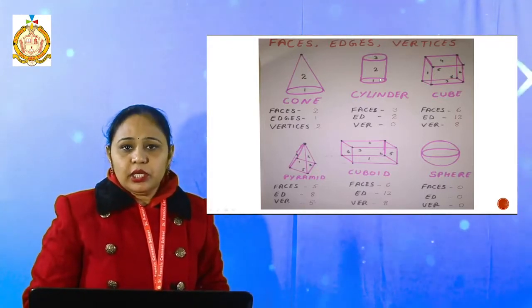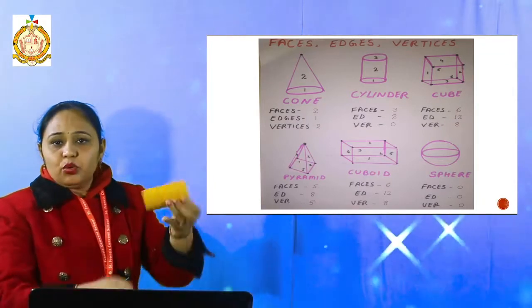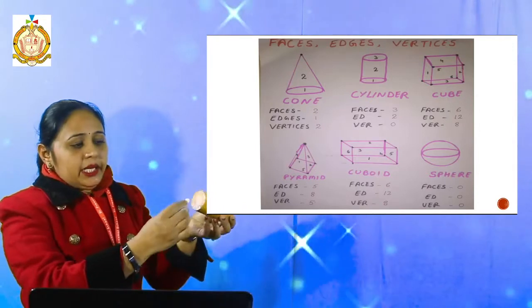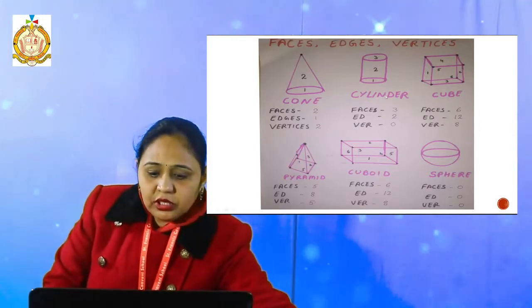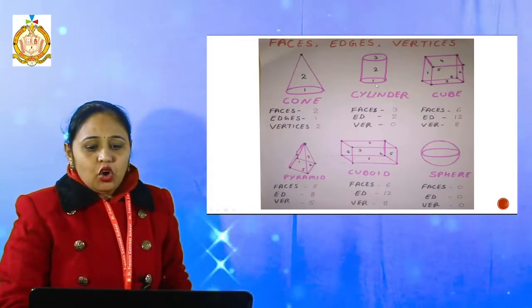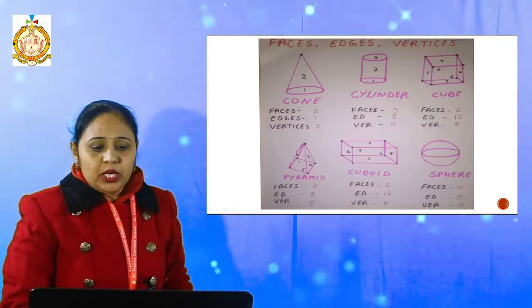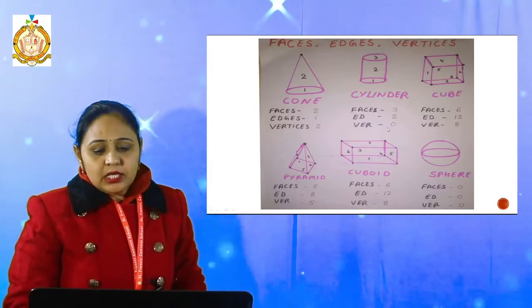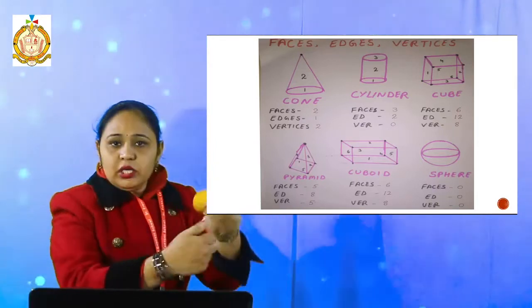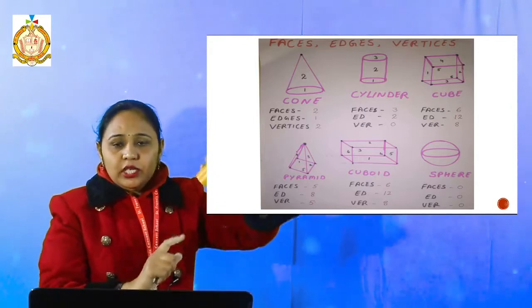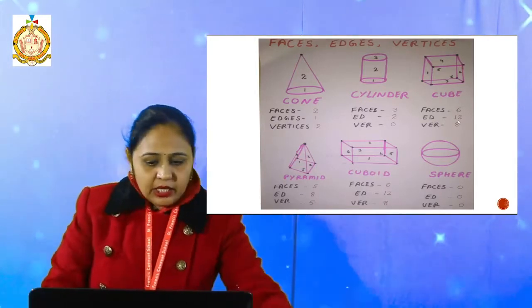Then in the case of a cylinder — how many faces are there? This round part is one, then the top is the second, and the bottom is the third. That means it has three faces. And how many edges does it have? One circular edge at the top and another at the bottom — that means two edges. And for vertices, there is no corner in the cylinder, so there are no vertices.